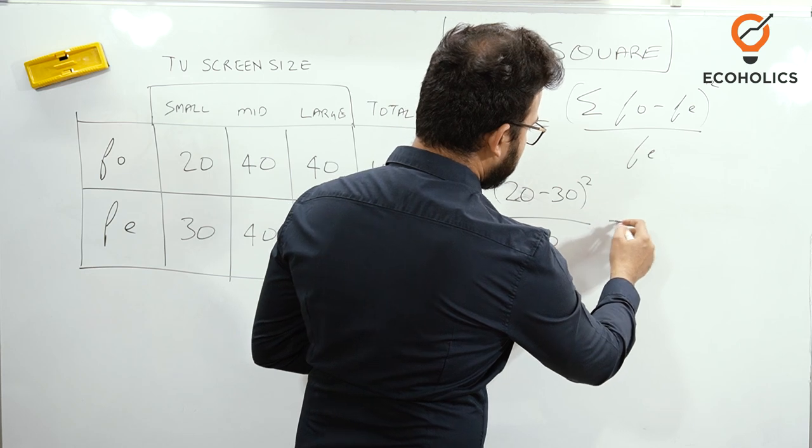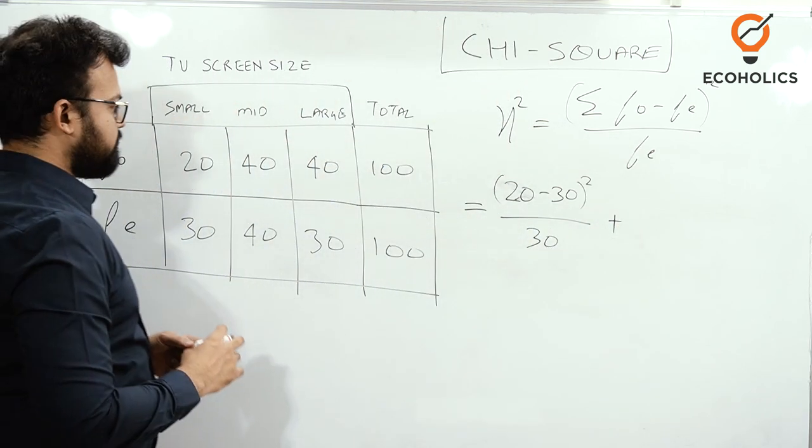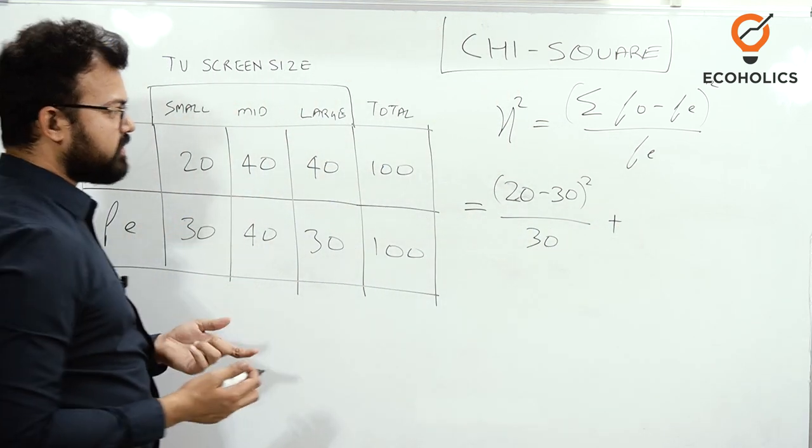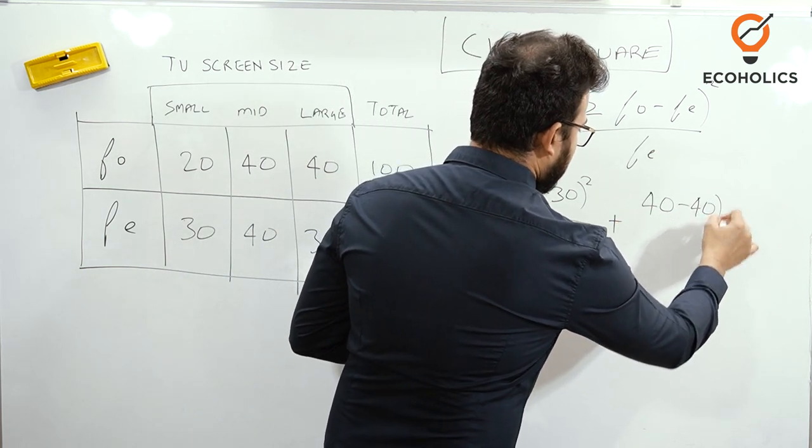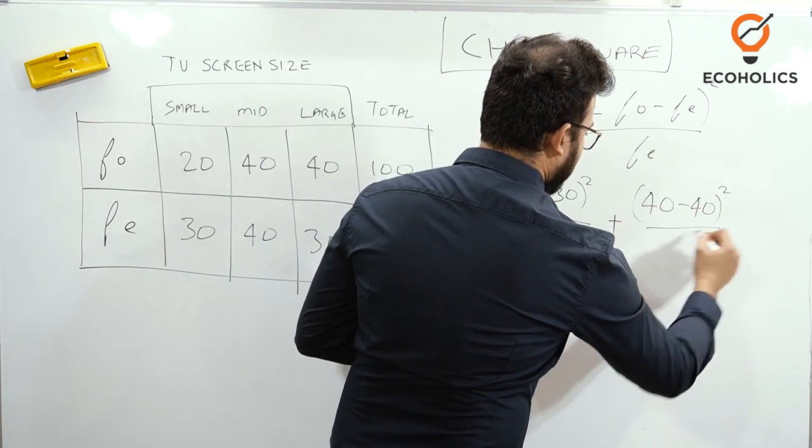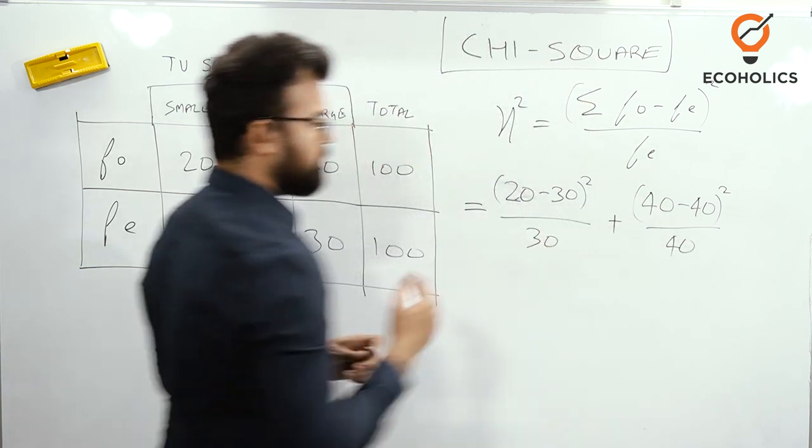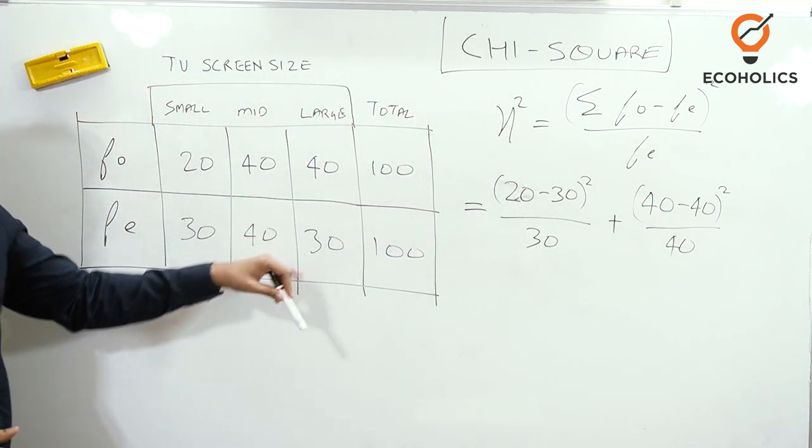In the next one, we'll add this and write the second one, so 40 and 40 here. It means what you have expected, the actual order was also the same. Now you can see the last one.